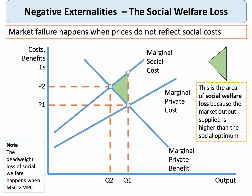That's the standard diagram. Top students also talk about the deadweight loss of welfare as a result of market failure. The green triangle is the area of what's called social welfare loss, because Q1 — the market output supplied — is higher than Q2, the social optimum. If you go beyond Q2, the marginal social cost is greater than the marginal private benefit, so we're losing some welfare as shown by that green shaded area.